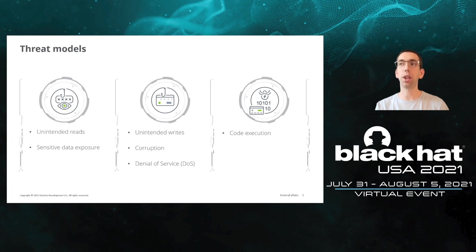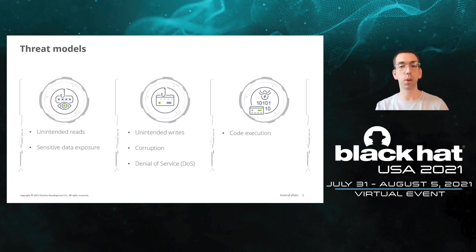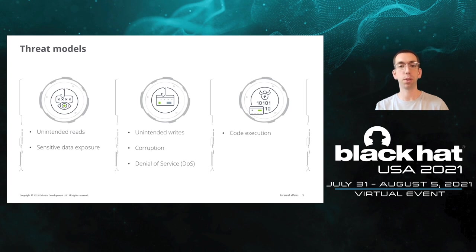Let's talk about threat models — what does an attacker want to do or a defender want to prevent? First is unintended reads: you don't want sensitive data exposed to the internet. Unintended writes would be even worse — you might be able to corrupt files or cause denial of service conditions on your disk. And most severe would be code execution, where you'd be able to do all the previous as well as persistent access and even encrypt your drive for ransomware.